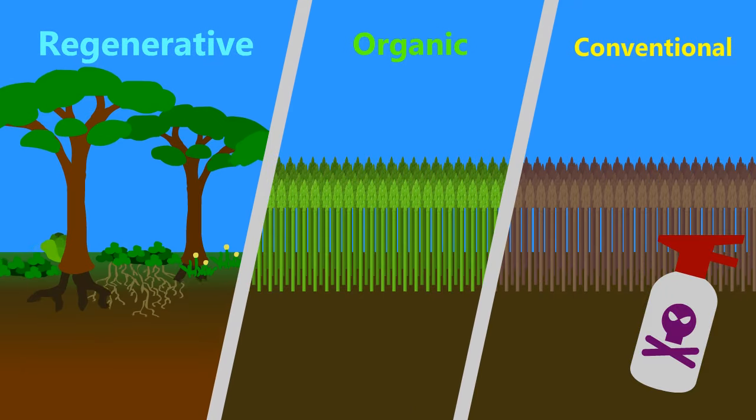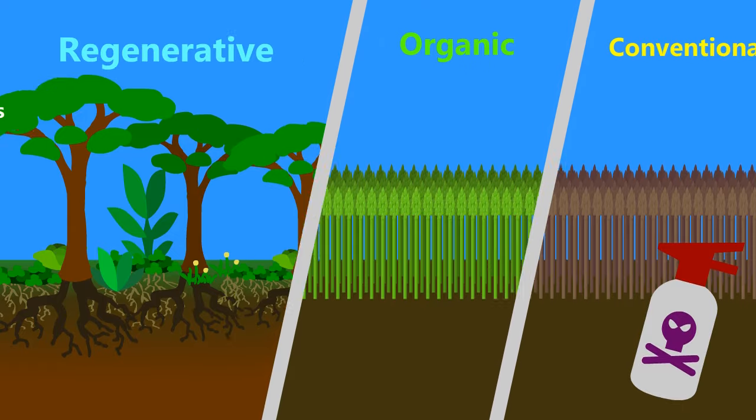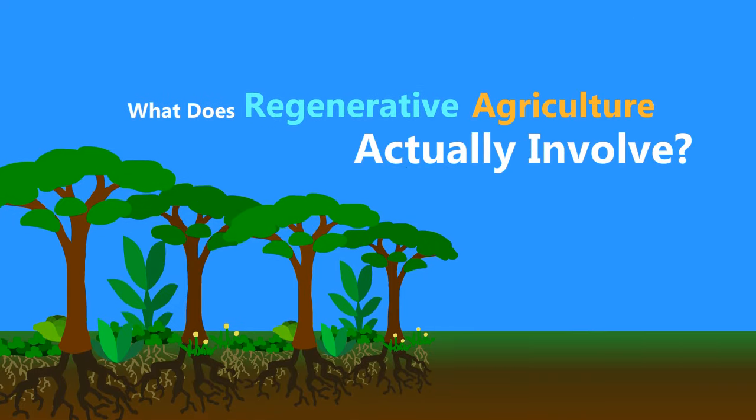Regenerative agriculture is a way to reverse this trend to actually make a positive impact on the land. So what does regenerative agriculture actually involve?